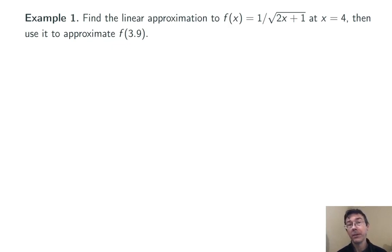Here's an example. Find the linear approximation to f of x equals 1 over the square root of 2x plus 1 at x equals 4, and then use it to approximate f of 3.9. So this is potentially labor saving. Plugging 3.9 into that square root could take some serious calculation. Plugging into a linearization, the equation of a straight line will be relatively simple.